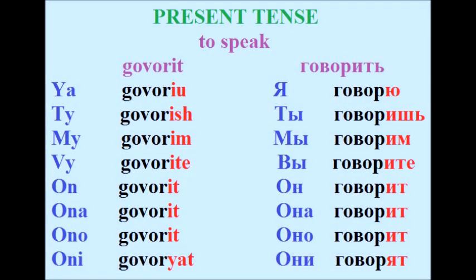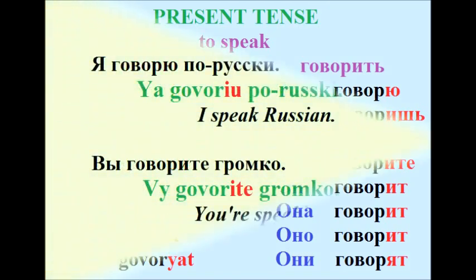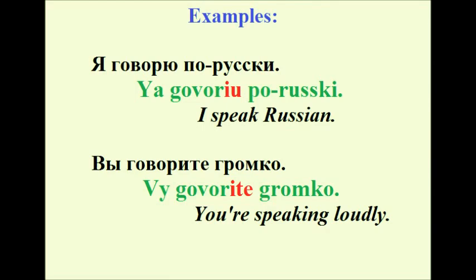Говорить. Present tense: Я говорю, ты говоришь, мы говорим, вы говорите, он говорит, она говорит, оно говорит, они говорят. Examples: Я говорю по-русски — I speak Russian. Вы говорите громко — You speak loudly.